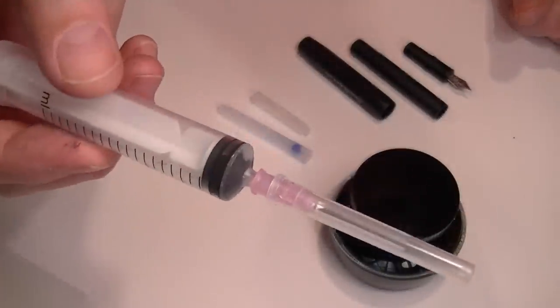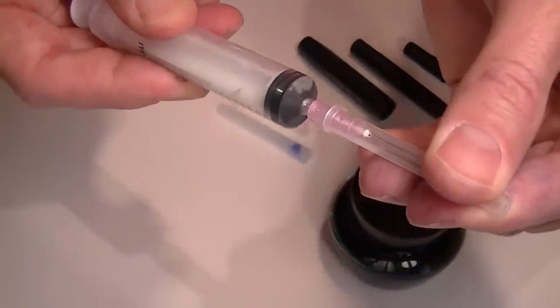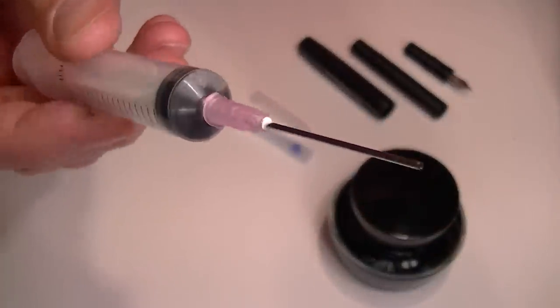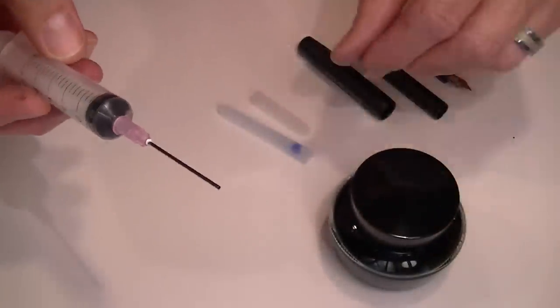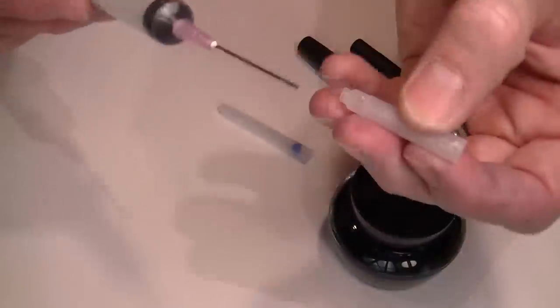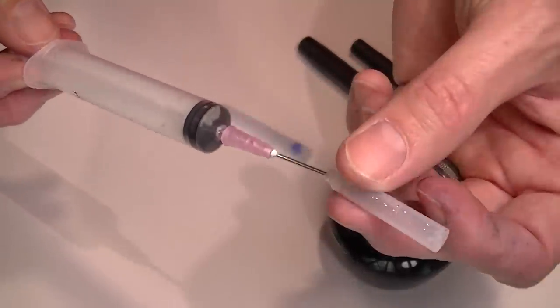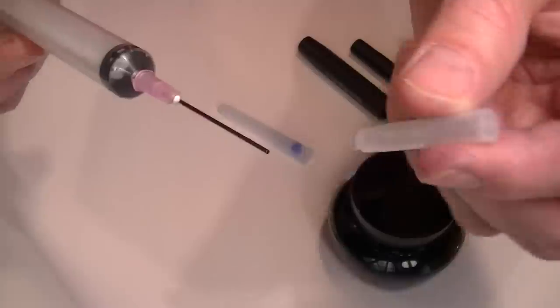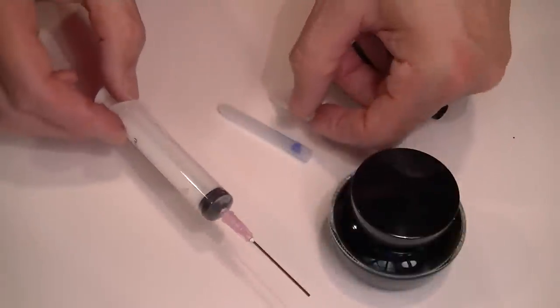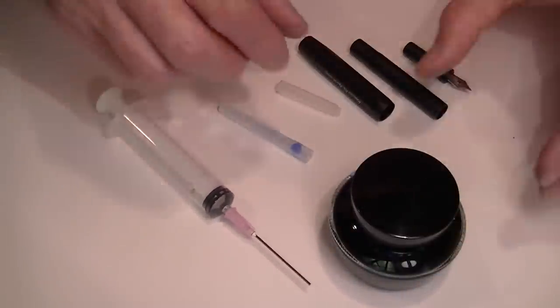So what I do to clean out the ink cartridge is to use a syringe. You want a syringe that doesn't have a sharp tip just a dull end to it. And you will just fill the syringe with water and insert it into the cartridge and just run water through the cartridge until you can get it nice and clean. Get all that old ink out of the cartridge. You don't want any of the old ink in the cartridge.